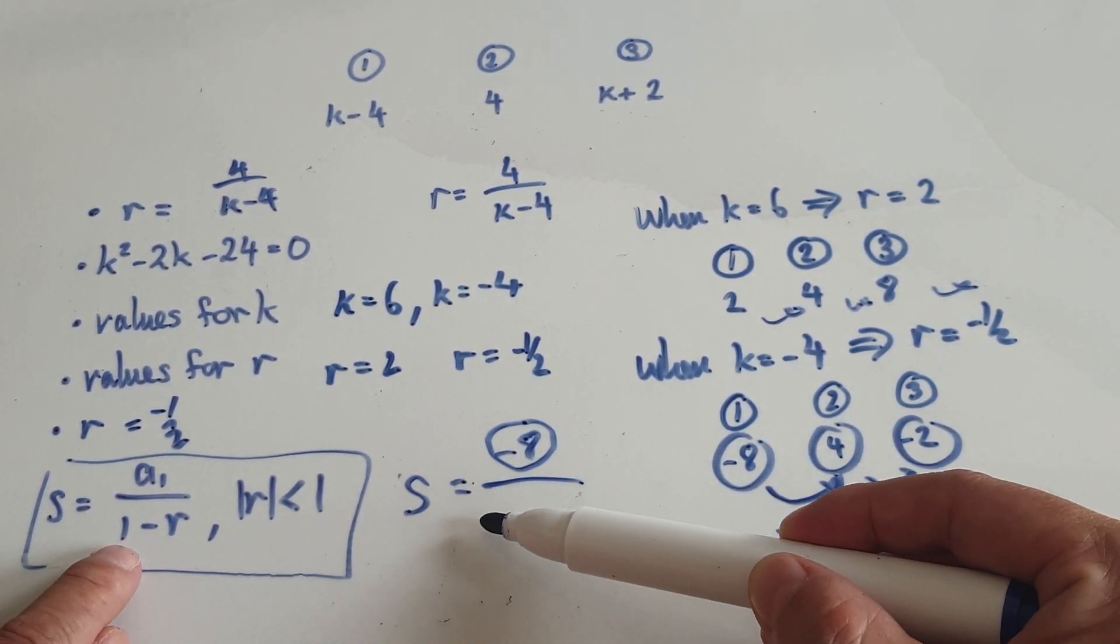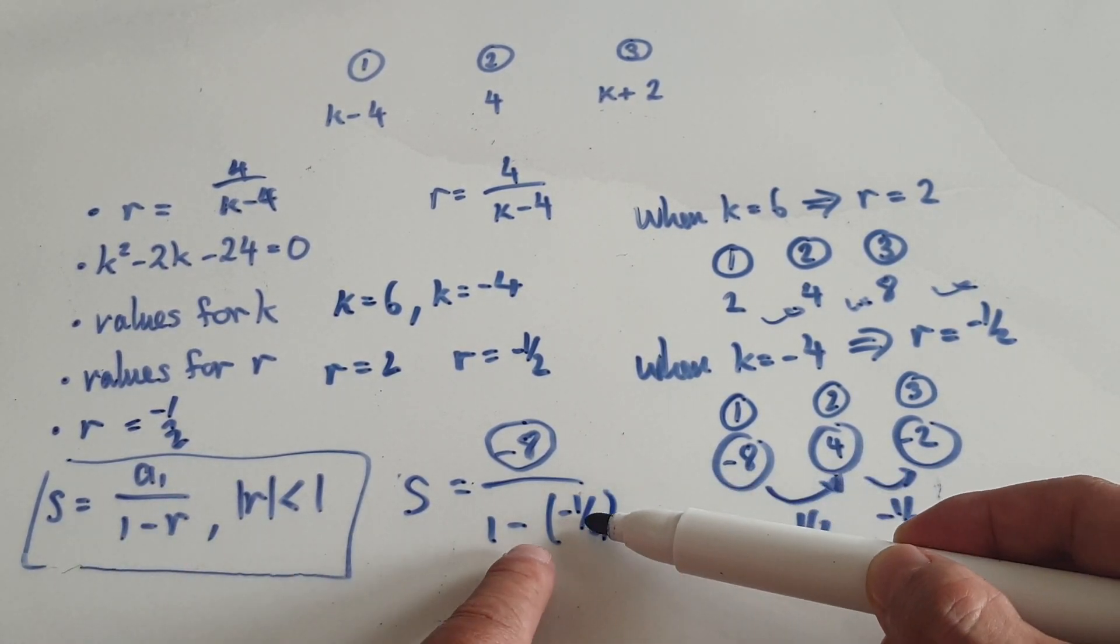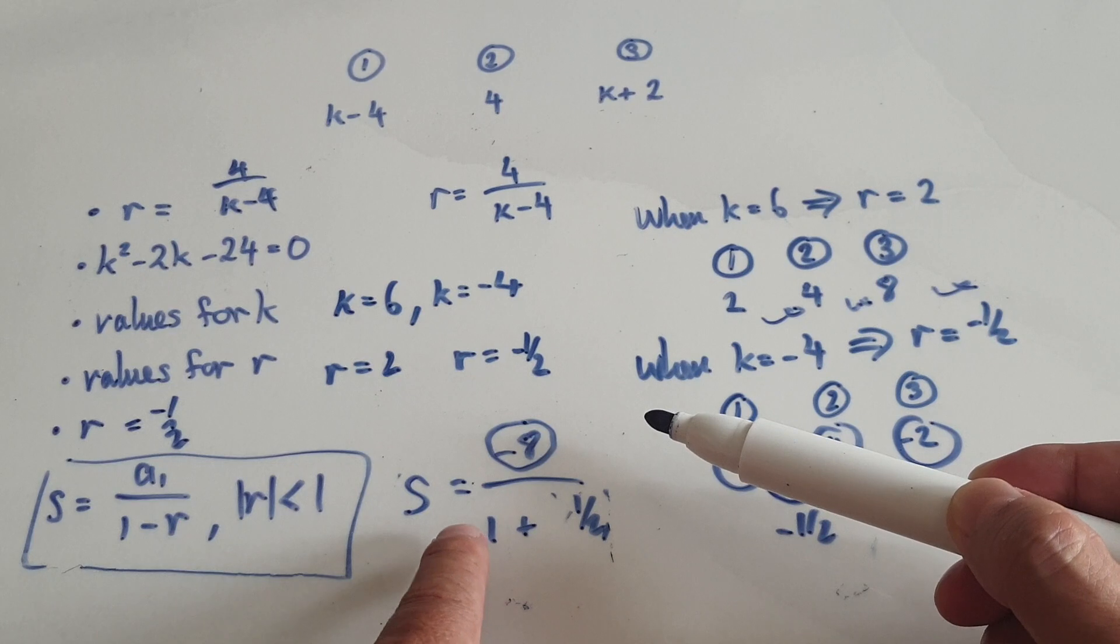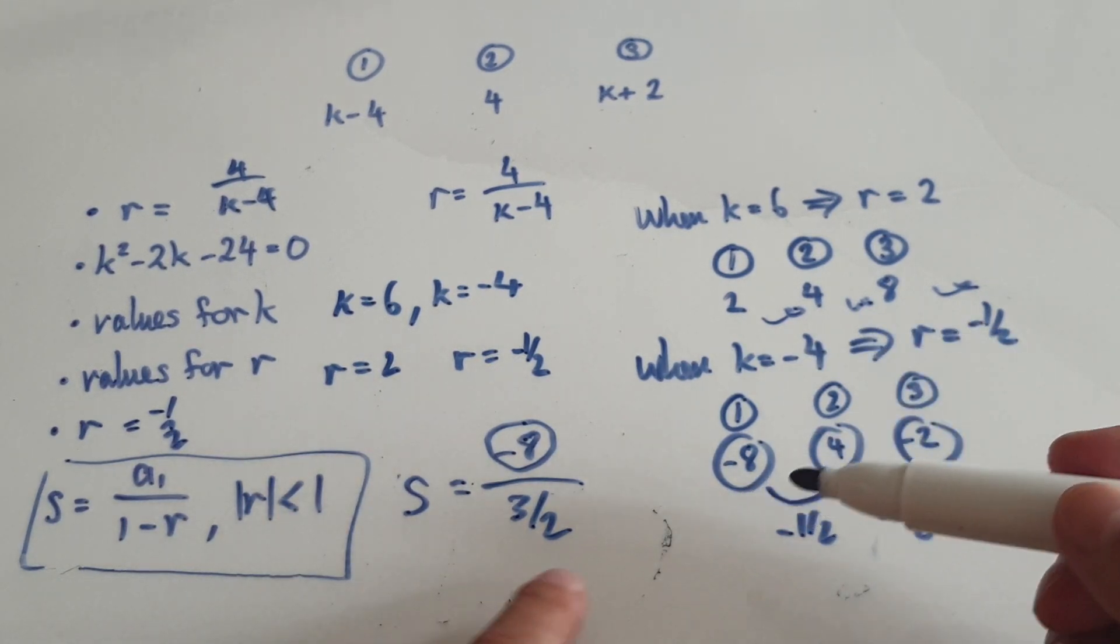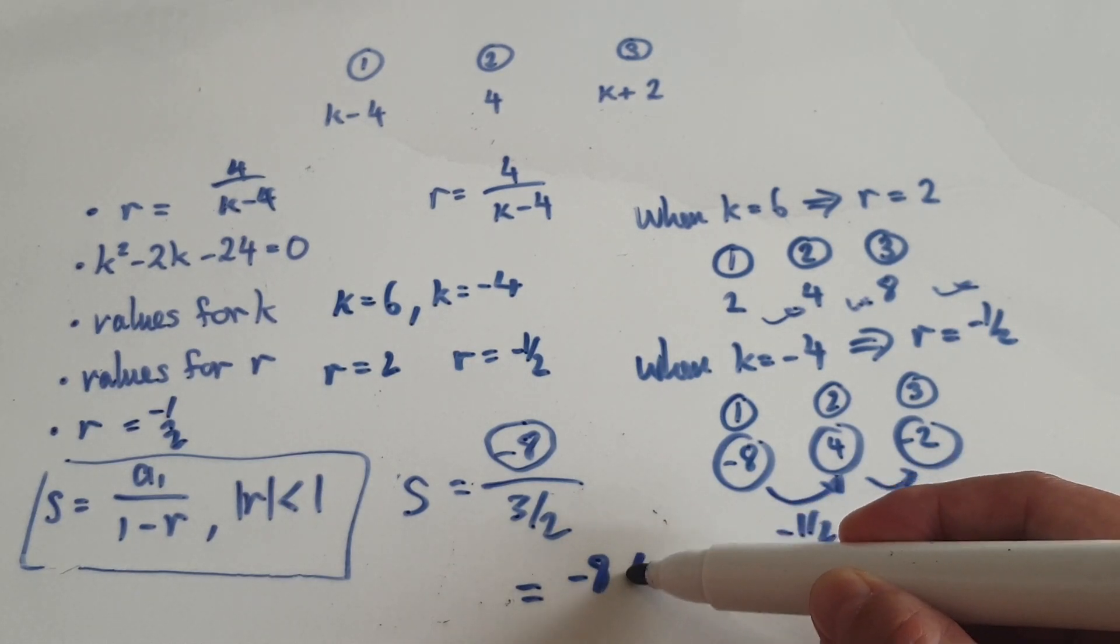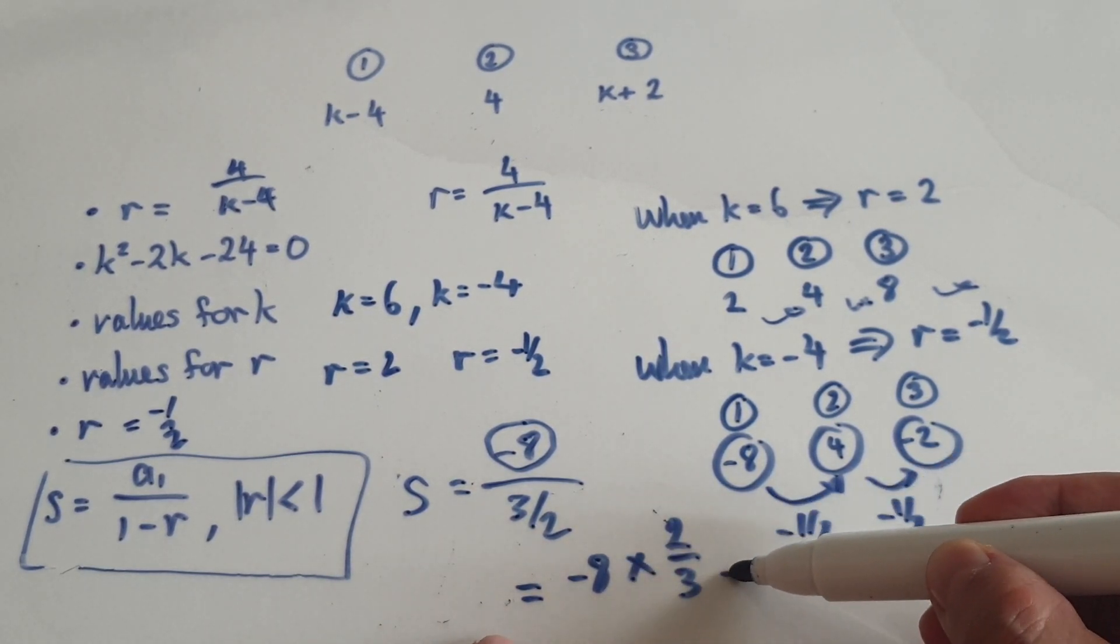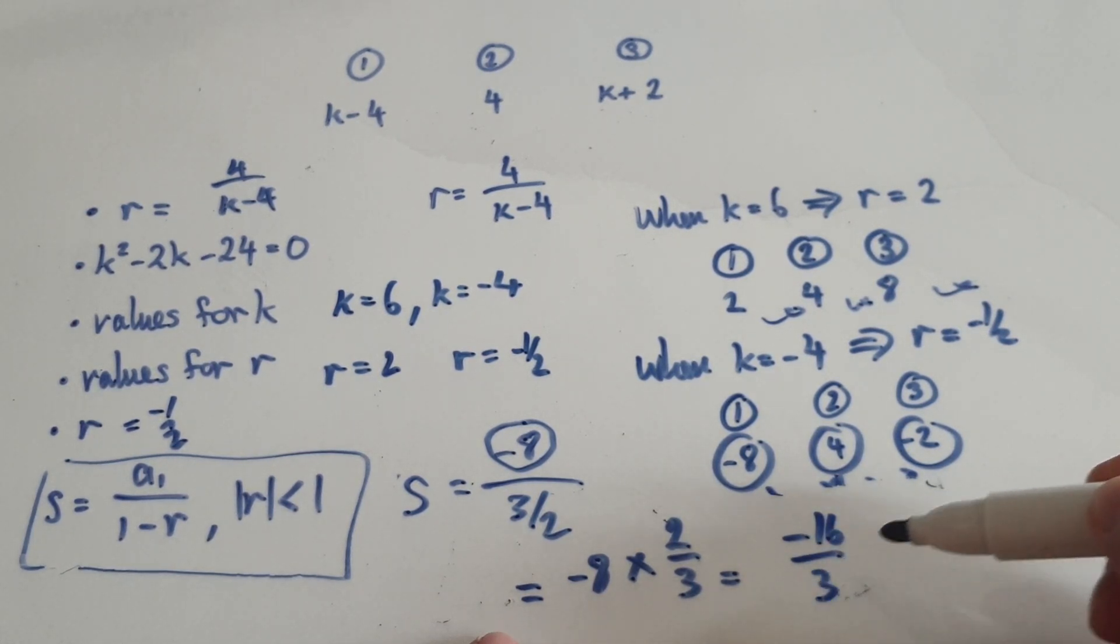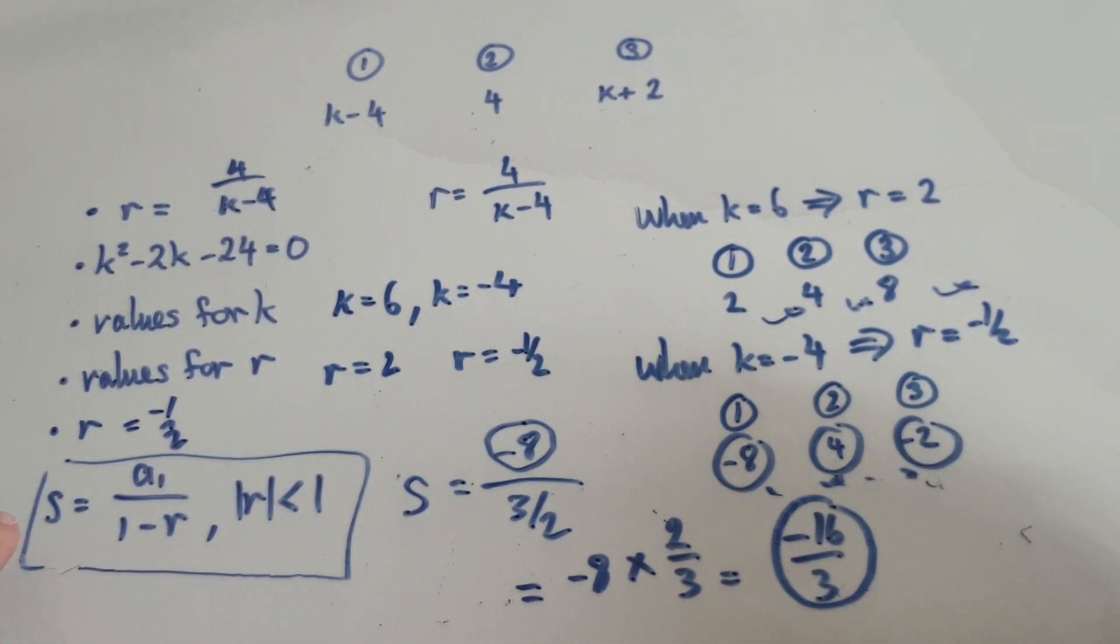Divided by 1 take away negative a half, so that means plus a half. That would mean 3 over 2. So let's try and tidy this up. This then equals negative 8 times the reciprocal of the bottom, so this gets multiplied to the top. That would be negative 16 over 3. So this is your final answer. The whole sum is that.